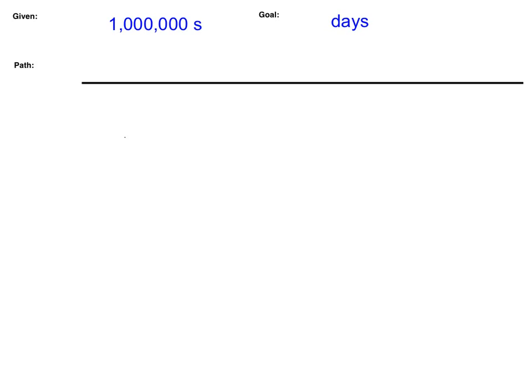All right, I would like you to please pause the video and try and solve for this one on your own. The answer is going to be 11.57 days. If you got that as a correct answer, fantastic — move on to the next slide. If you got that incorrect, please follow along as we go through and solve this problem. We need to convert: if we have a million seconds pass, how many days is that? Let's go through and solve for it.